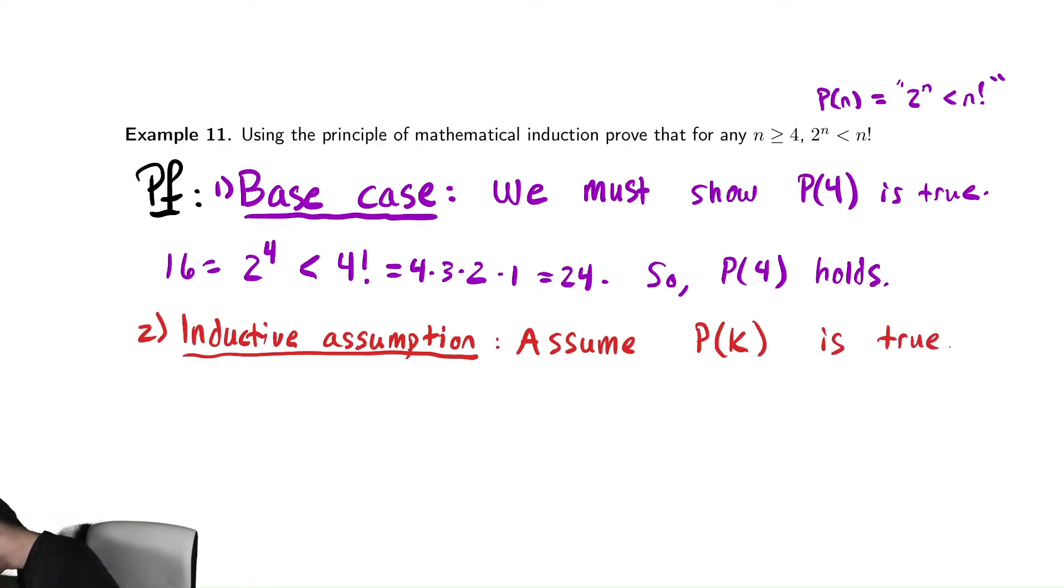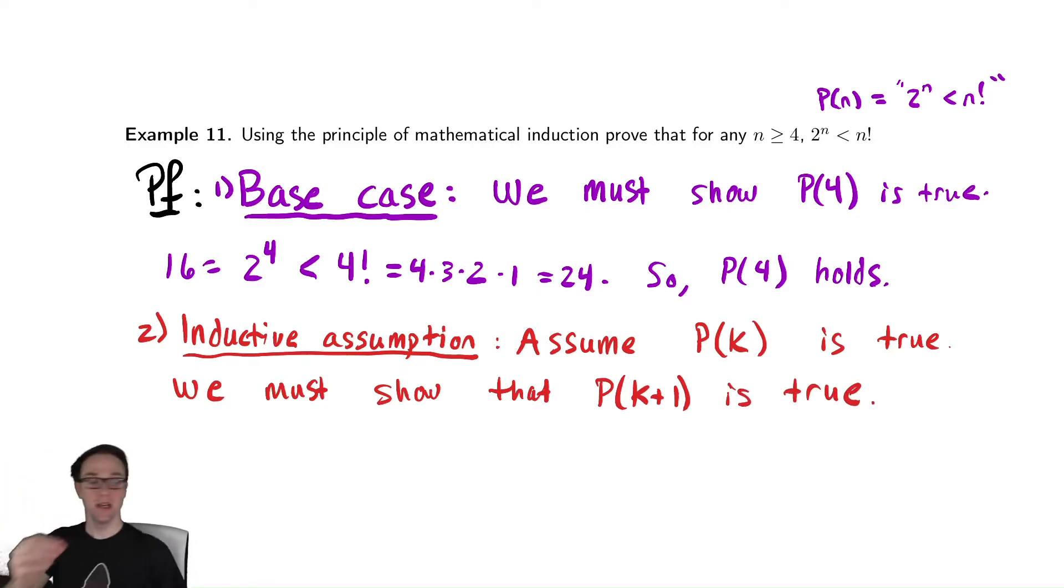If P(k) is true, we must show that P(k+1) is true. This is the idea that we must show that P(k) implies P(k+1). In our notation, just like we did before when we were doing our other proofs, we assumed that the hypothesis was true and then needed to do logically consistent steps to show that the conclusion was true.